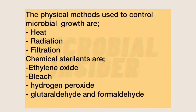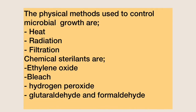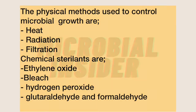The physical methods used to control microbial growth are heat, radiation, and filtration. Whereas some of the most common chemical sterilants are ethylene oxide, bleach, hydrogen peroxide, glutaraldehyde, and formaldehyde.